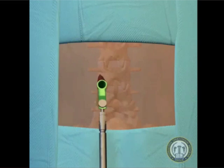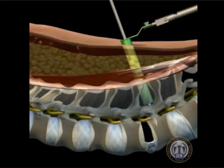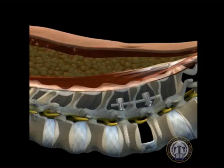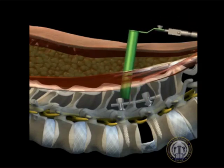Following the discectomy, the interspace may now be distracted by creating a mirror 2.5 cm skin incision on the contralateral side, centered over the interspace. Percutaneous pedicle screws are then placed, and a rod is sub-fascially levered into place. The contralateral screws are tightened to a distracted position in order to create optimal space for the interbody device. If there is concern about contralateral neural element compression, a direct decompression can be obtained by repositioning or wanding the ipsilateral tubular retractor, or by placing a second tubular retractor through the contralateral incision.